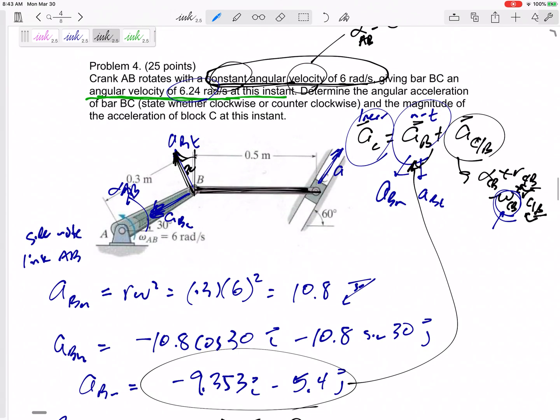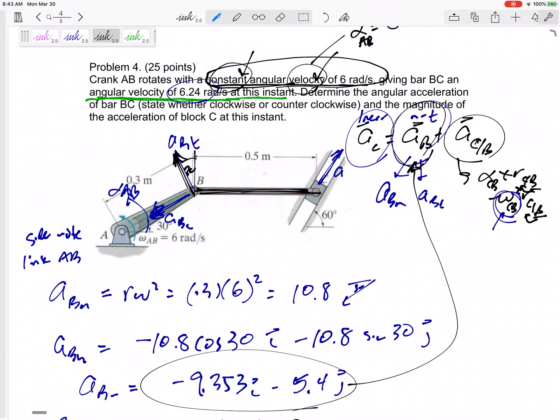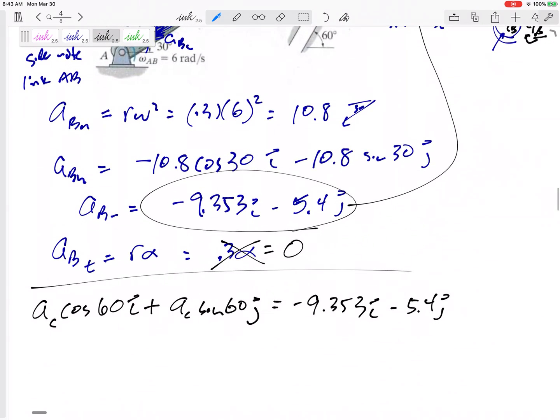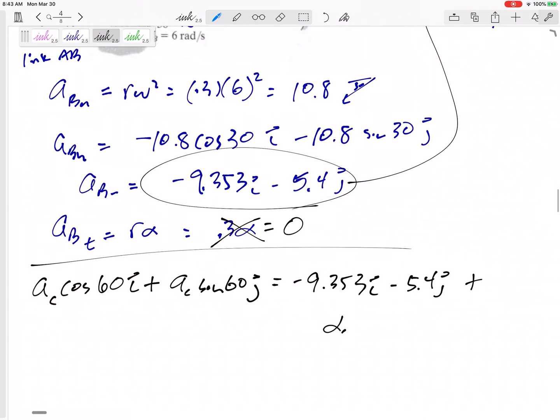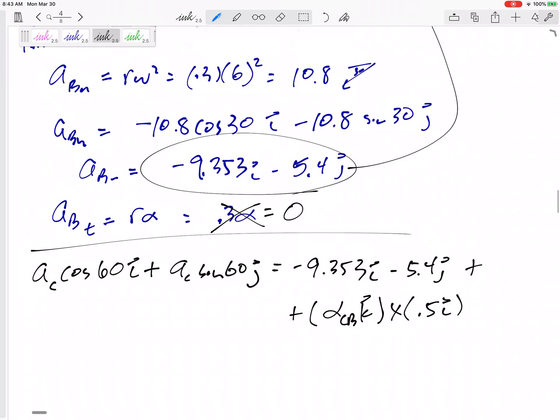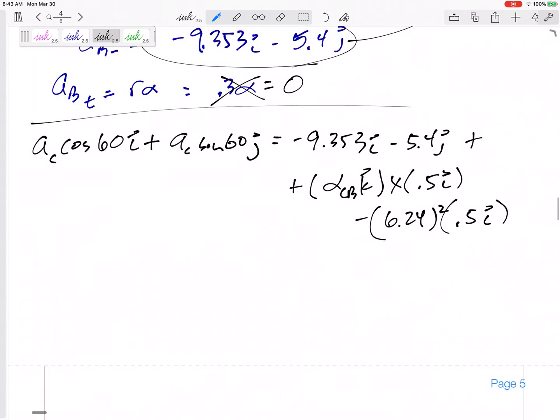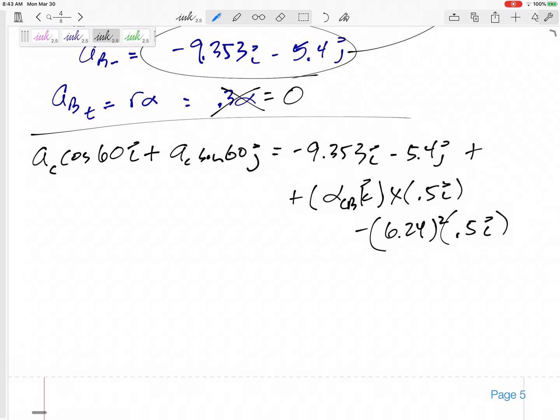Then the acceleration of B, it has normal and tangential, or could have normal and tangential, negative 9.353 minus 5.4, and I was just lucky there was no tangential because a constant angular velocity means zero acceleration, plus alpha, I don't know it, but I know it's in the K direction, cross with R from B to C, from B to C, 0.5I minus omega squared, 6.24 squared times 0.5I.